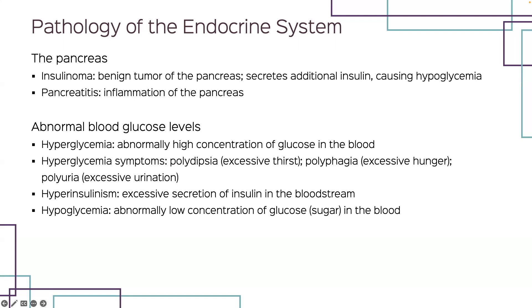For the pancreas, you have insulinoma, which is a benign tumor of the pancreas that secretes additional insulin, causing people to go hypoglycemic. Pancreatitis is inflammation of the pancreas. Abnormal blood glucose levels include hyperglycemia and hyperinsulinemia, as well as hypoglycemia — too high a blood glucose level and an abnormally low concentration of blood glucose.